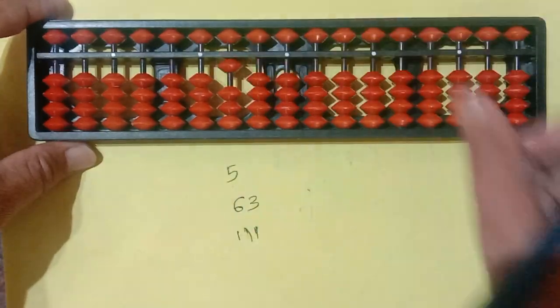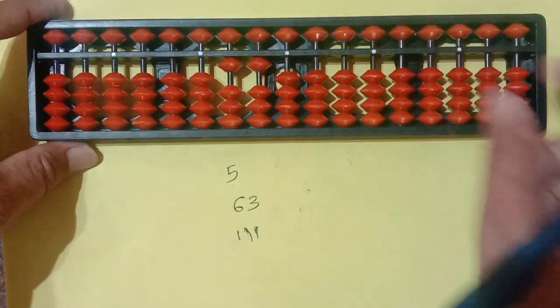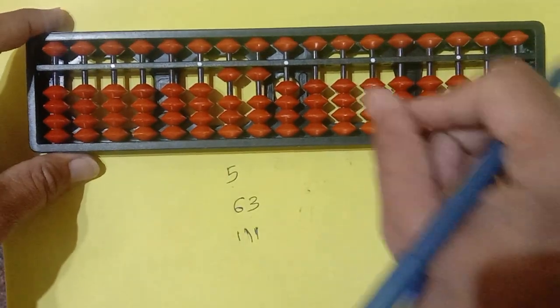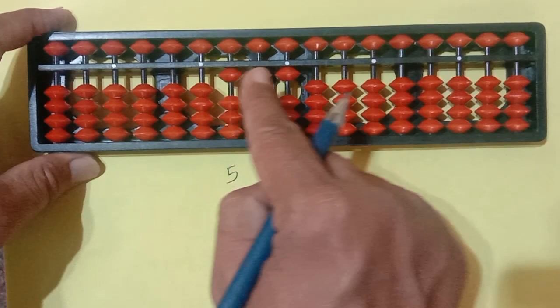So here in 100 place, 1. In tenth place, 1 bead. And in unit place, it is also 1. So it is 111.